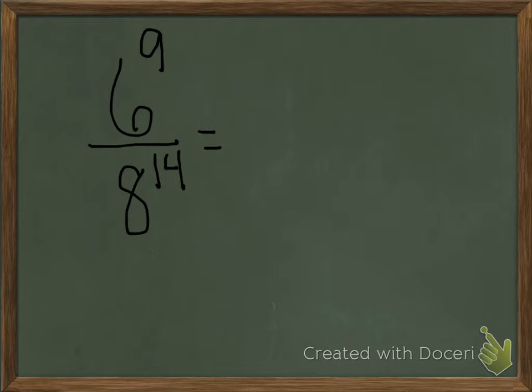To solve the problem, 6 raised to the 9th power divided by 8 raised to the 14th power can be simplified by rewriting our base 6 as 2 times 3 raised to the 9th power.